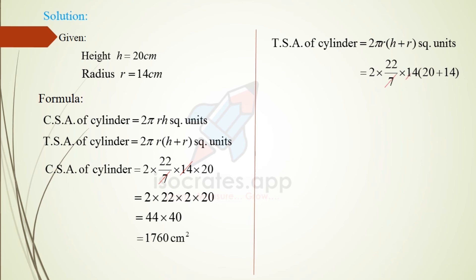Denominator 7, numerator 14, cancel upon by 2 times, which is equal to 2 into 22 into 2 into 34.